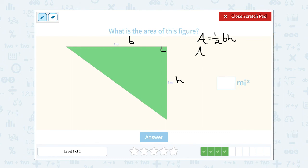So if we're plugging our numbers in one half the base was four and the height was three. So that's going to be one half of four times three or one half of 12. And of course one half of 12 is just six. So our area is six miles squared.